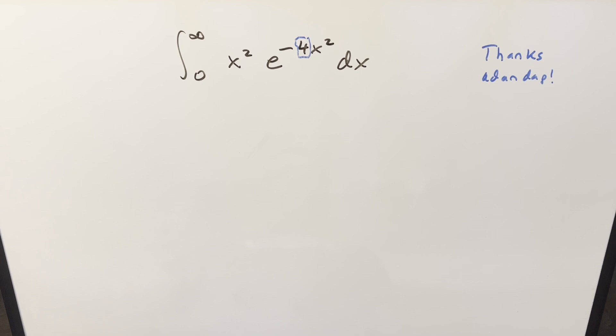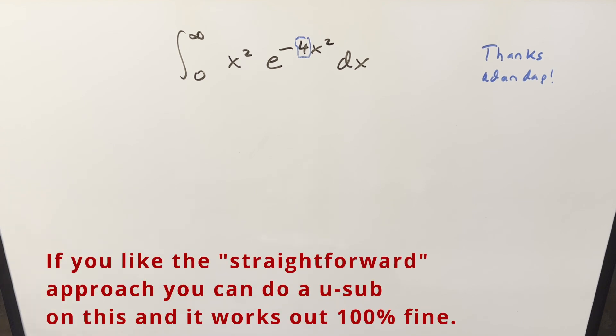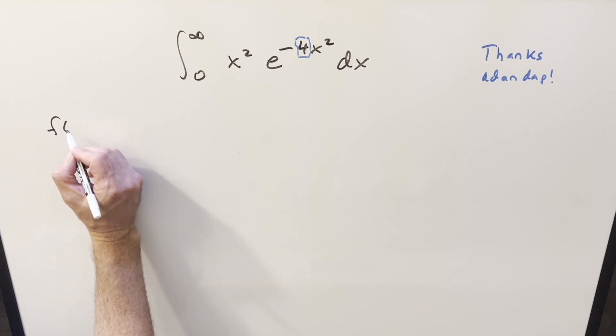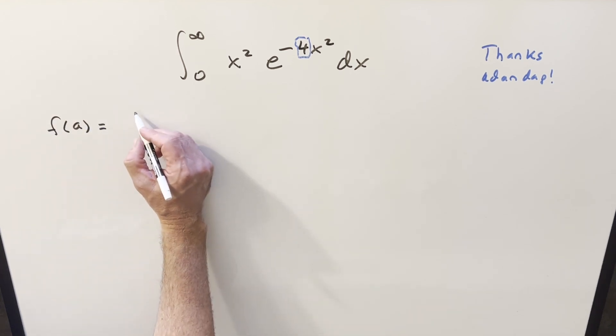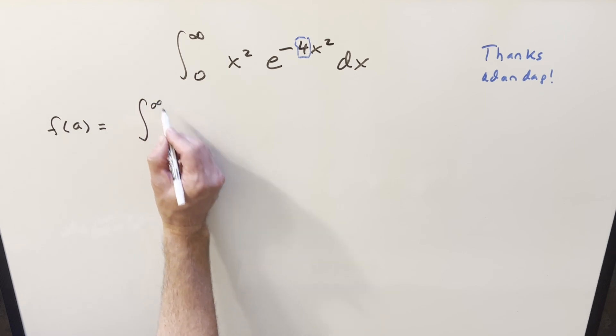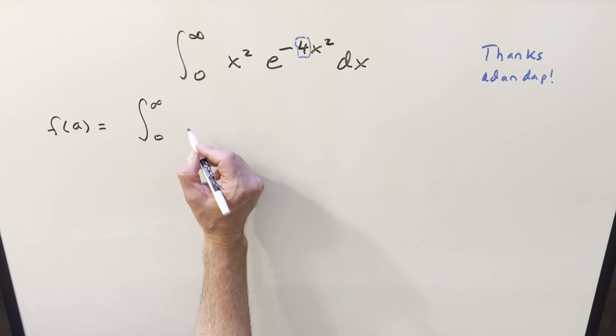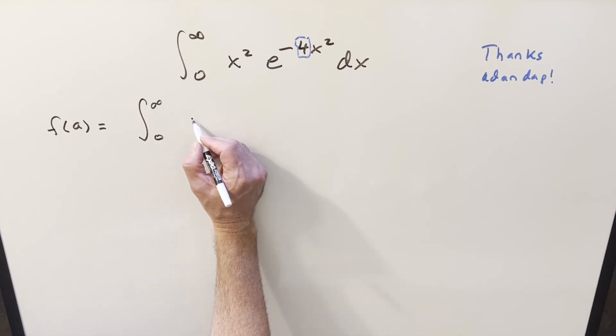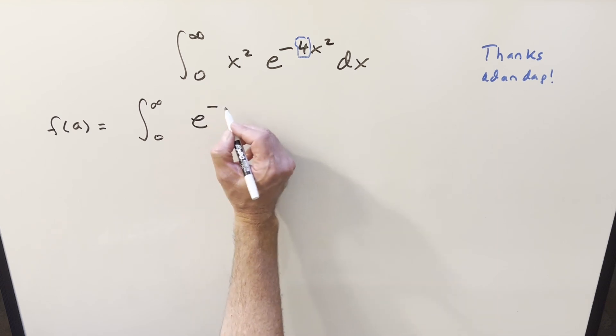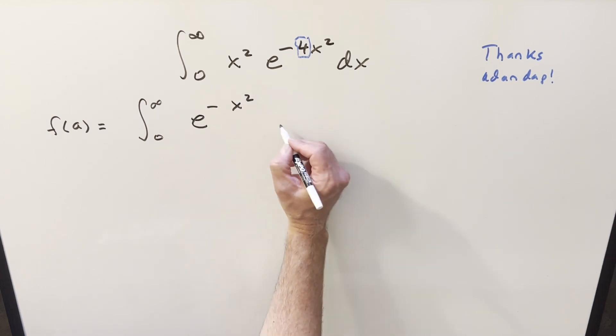The suggestion from Dan Dapp was that we could actually do this using Feynman's trick. And it was pretty interesting. I hadn't really thought of it that way. So what we can do to parameterize it is we'll create some function that we'll call f of a. And what we want to use is the Gaussian integral or something very similar. The Gaussian integral would just be the integral from 0 to infinity of e minus x squared dx.